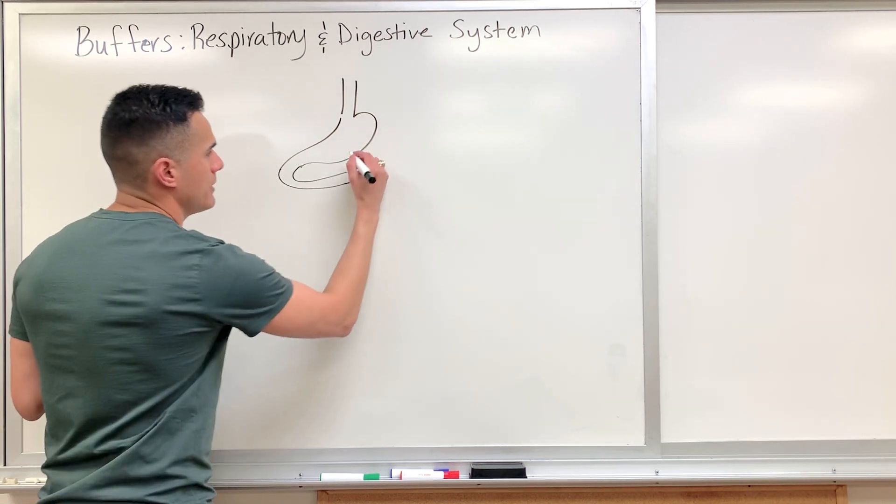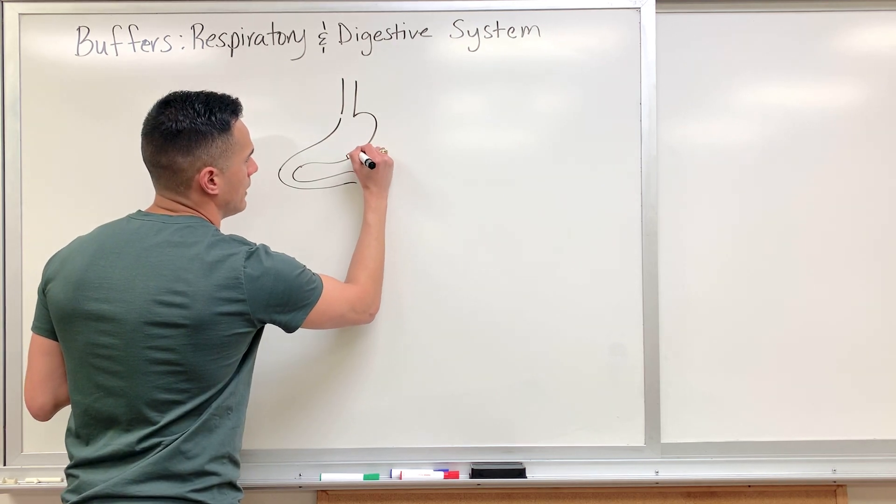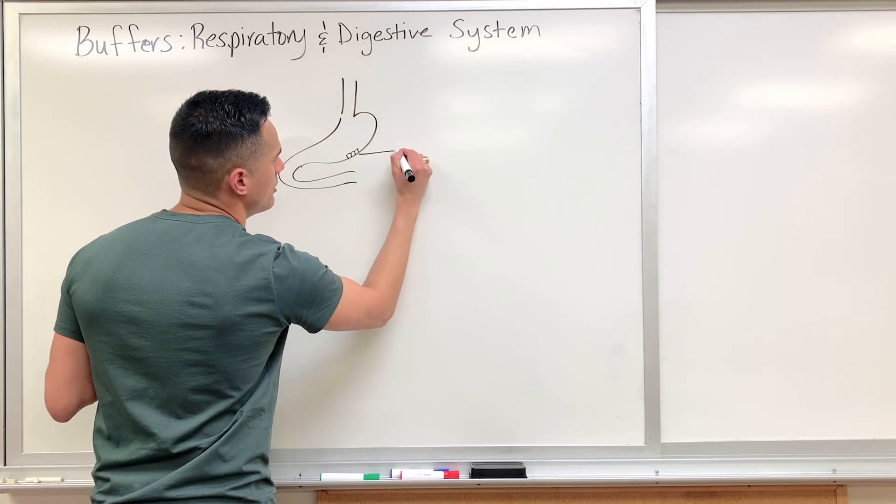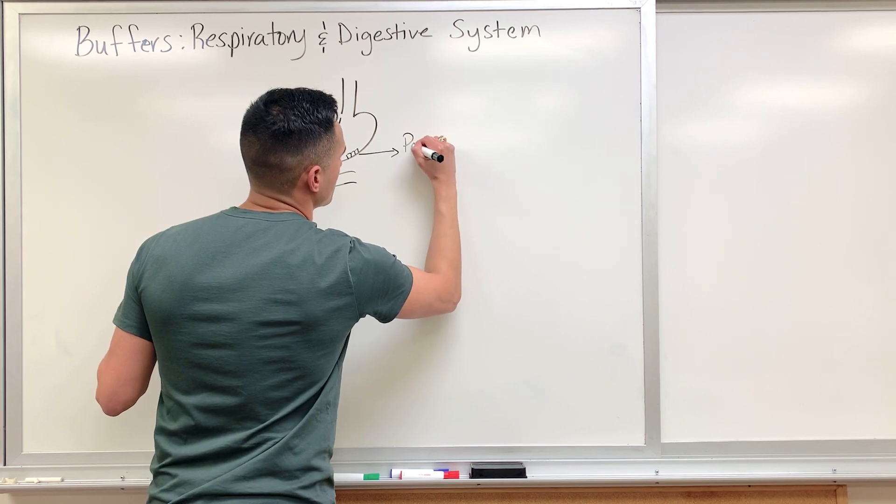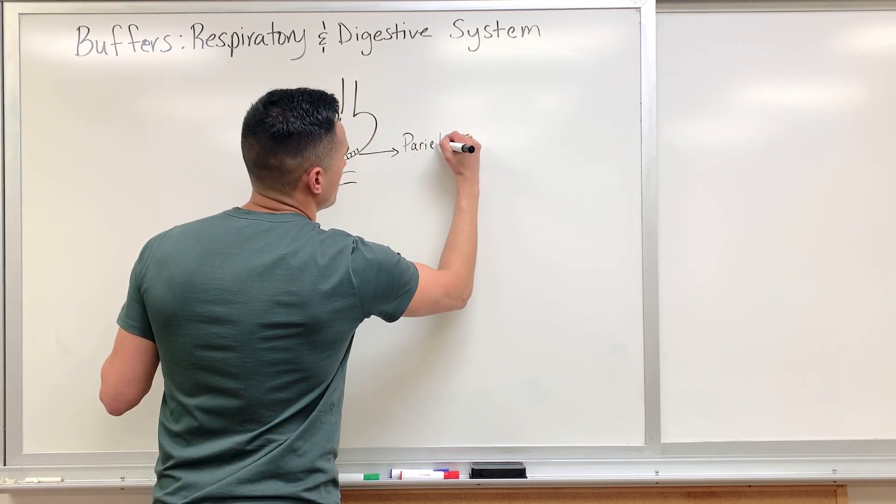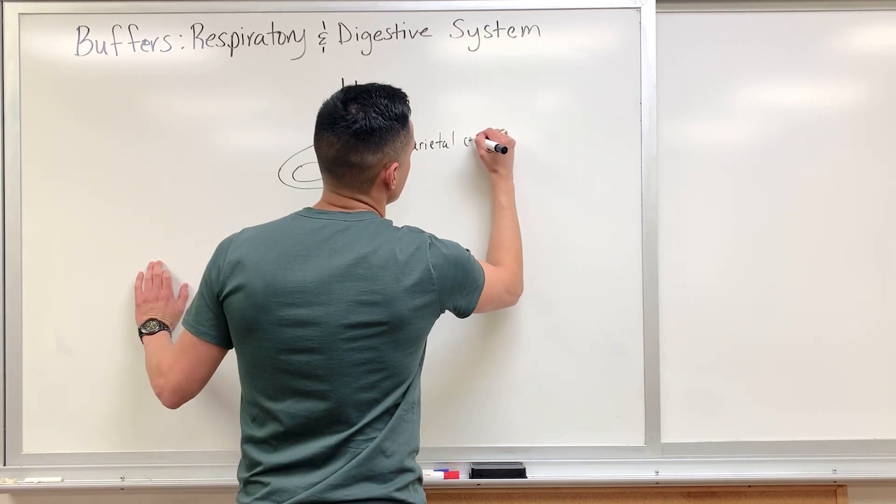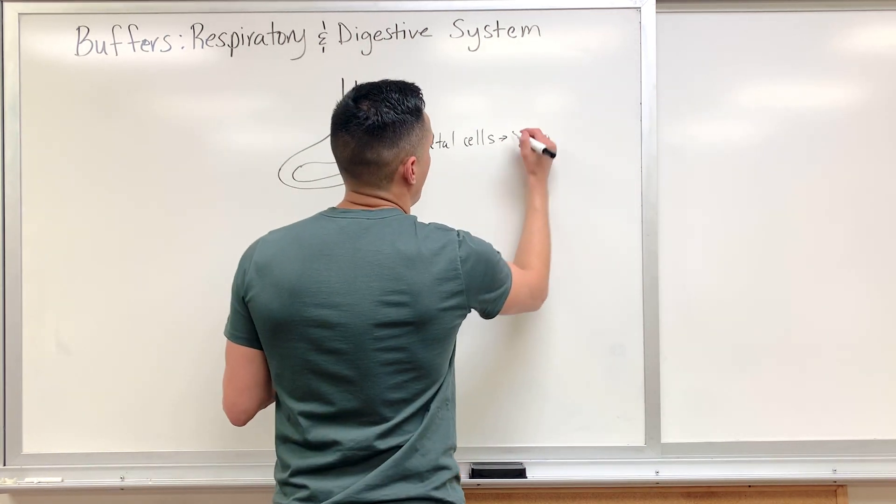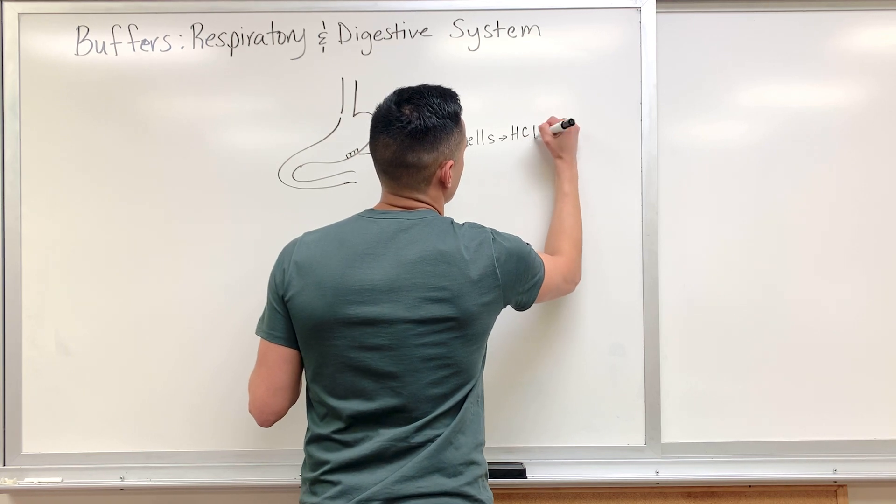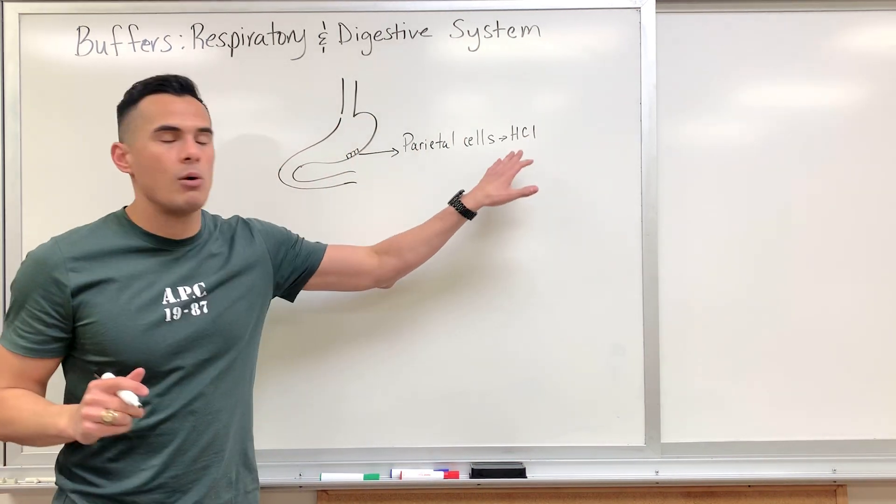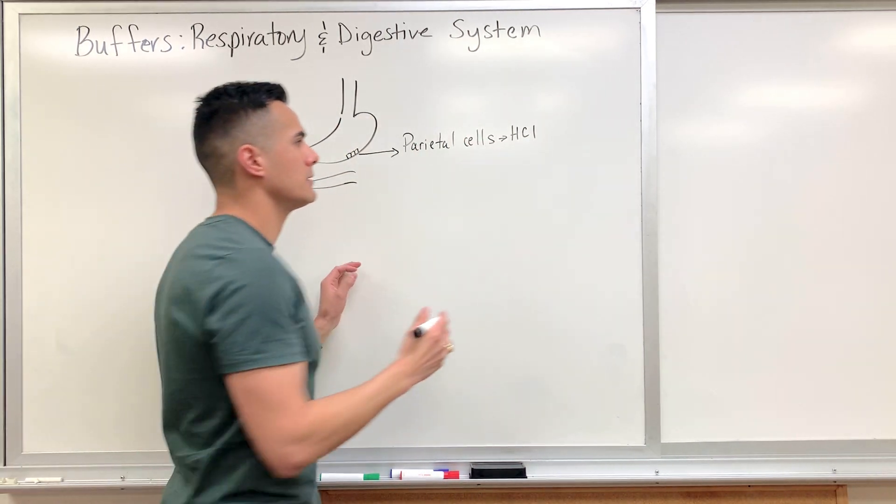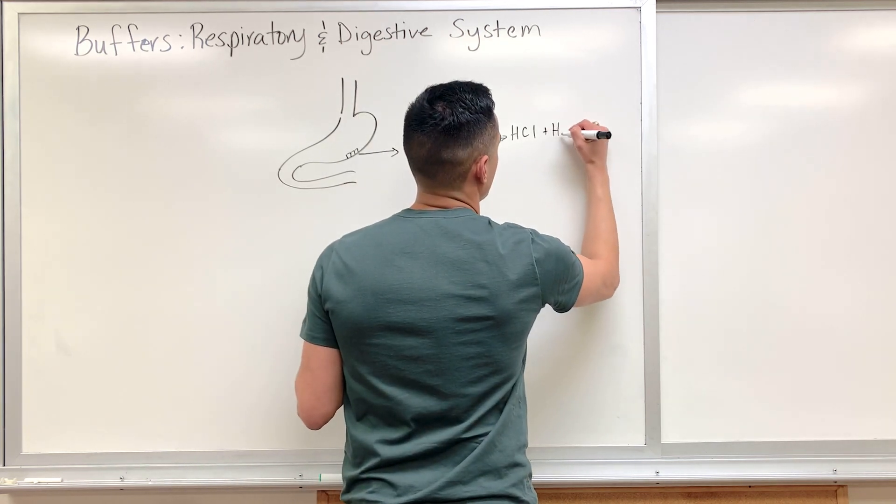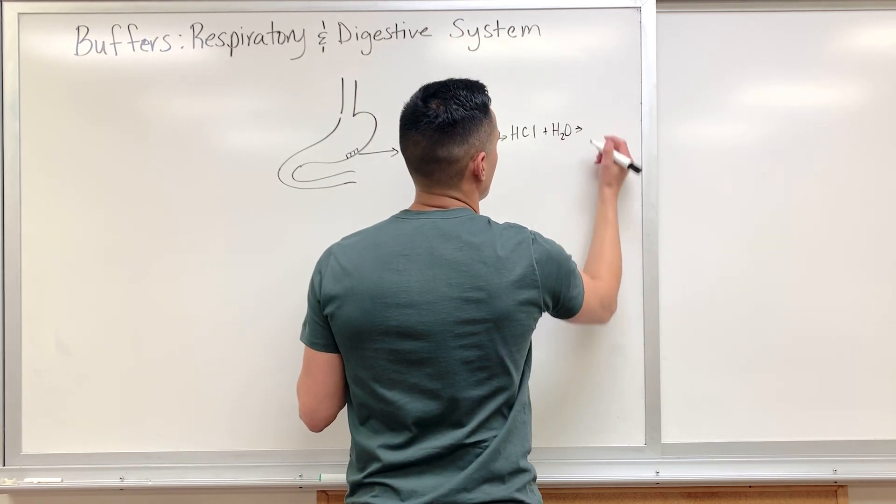Within the epithelium of the stomach we have what's known as parietal cells. Parietal cells secrete a strong acid known as hydrochloric acid. So when we add water to hydrochloric acid, this is what we form.